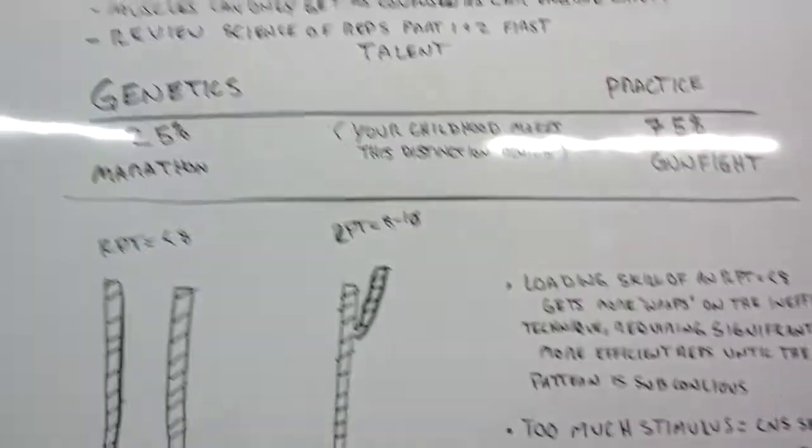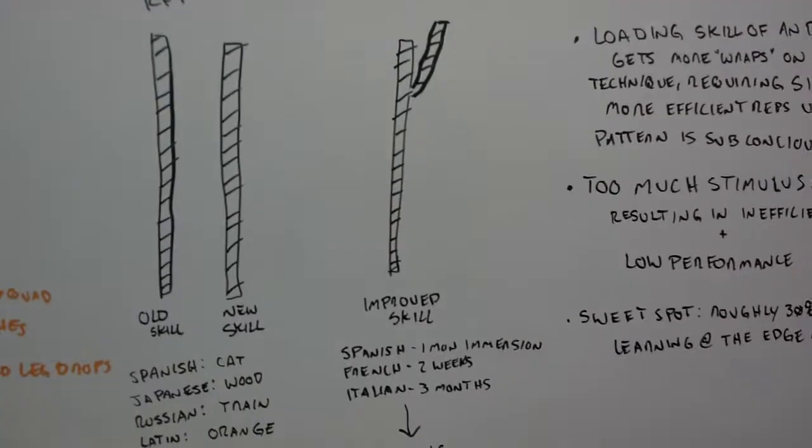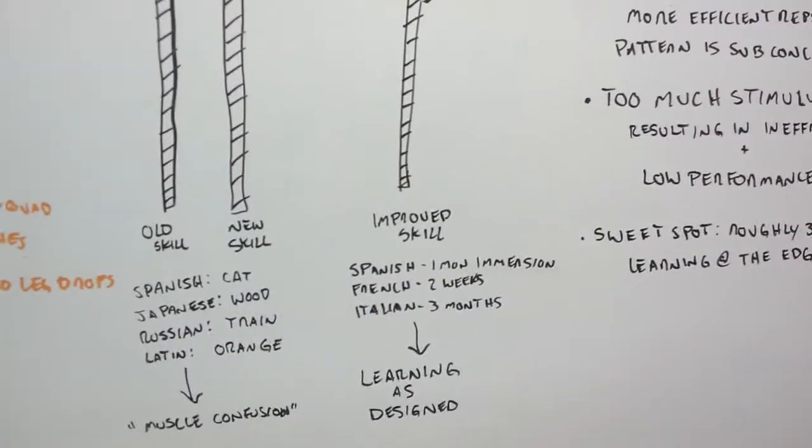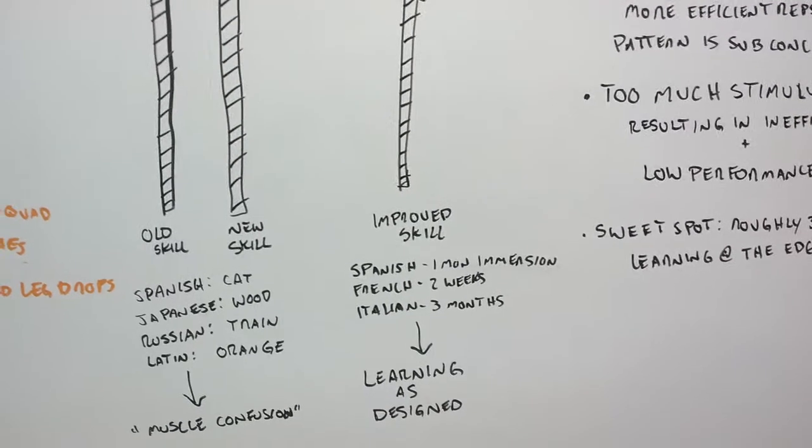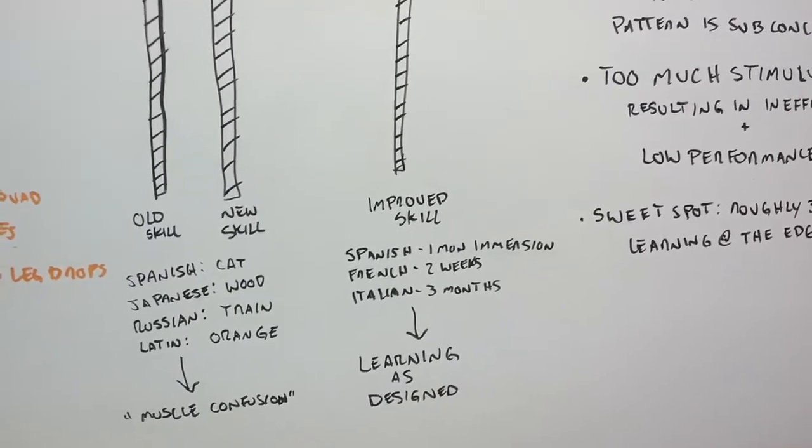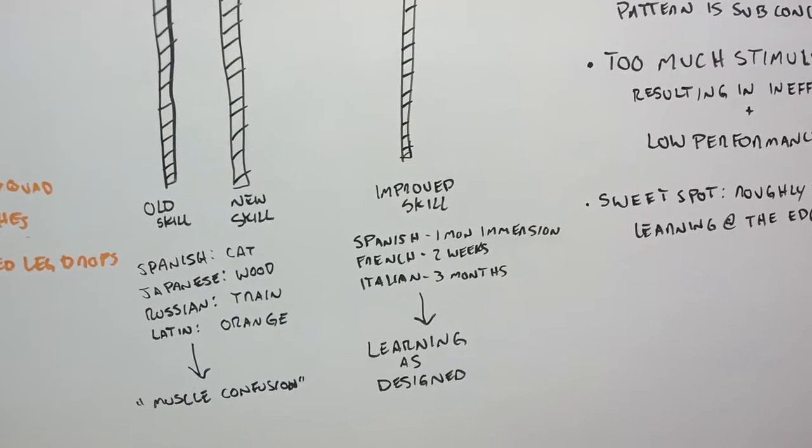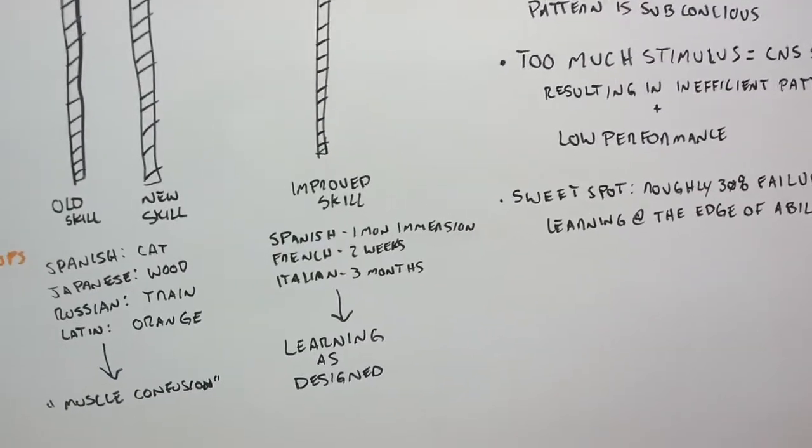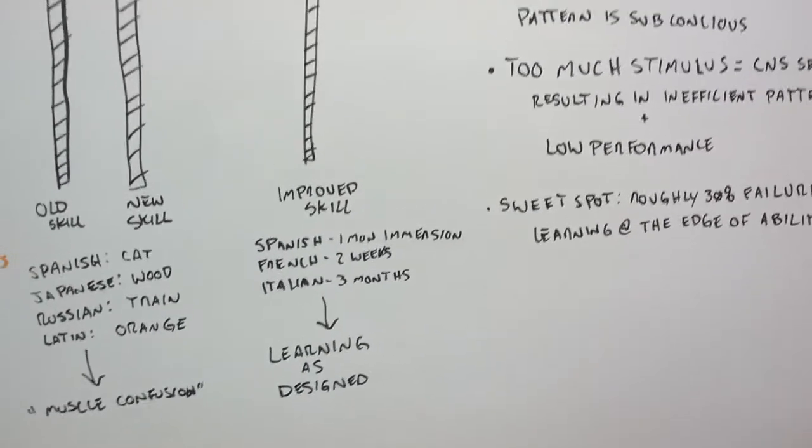So it's a brief overview on why muscle confusion is bullshit. Main takeaway is think about this language analogy, that if you're learning different words for different languages every single day, even for the rest of your life it does not matter. You're not going to be very efficient in it versus if you immerse yourself in something and stay consistent with a central theme, you're going to be much more effective.